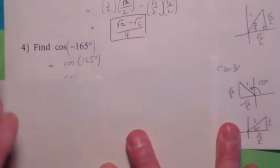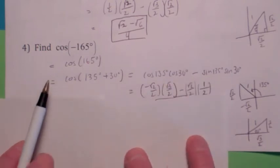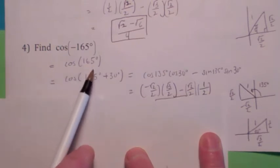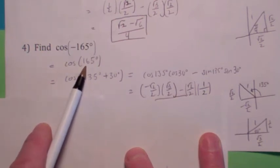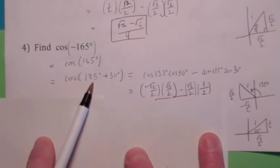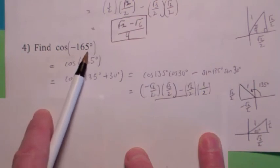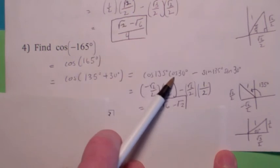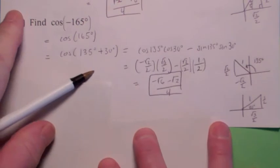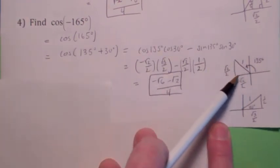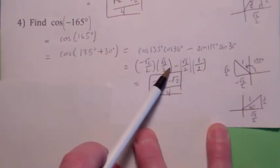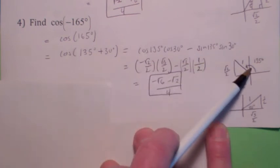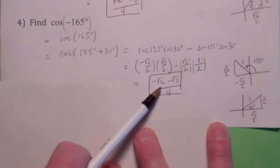How would you find the cosine of negative 165 degrees? Using even and odd properties, the cosine of a negative angle is just cosine of the angle, so you can drop the negative. How do you write 165 degrees in terms of two known angles? We're in the second quadrant. Since it ends in a 5, you might suspect a 45 degrees somewhere. It turns out 135 plus 30 equals 165. So it's cosine of the first, cosine of the second, minus sine of the first, sine of the second. Cosine of 135 is negative radical 2 over 2, cosine of 30 is radical 3 over 2, minus sine of 135 which is positive radical 2 over 2, and sine of 30 is 1 half. When you subtract that, you do get a negative number.